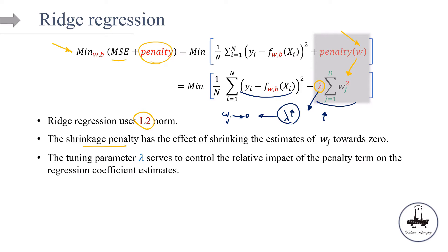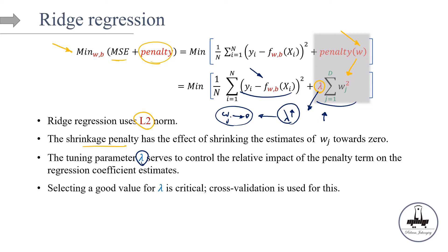The tuning parameter lambda serves to control the relative impact of the penalty term on the regression coefficient estimates. As lambda increases, these weights are sent towards zero and the features that are less contributing to the model fit are selected out. Selecting a good value for lambda is very critical, and we're going to use cross-validation to optimize the hyperparameter lambda.